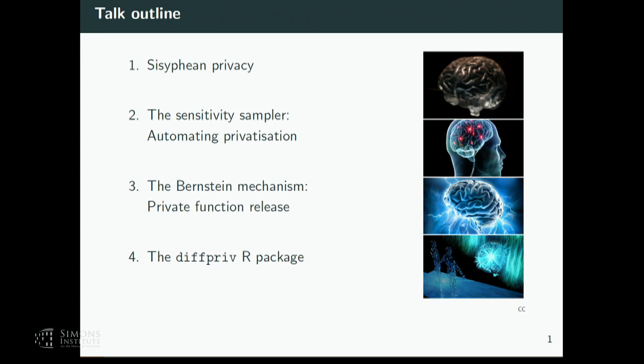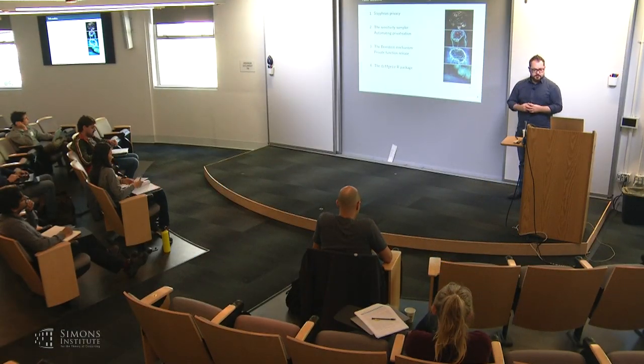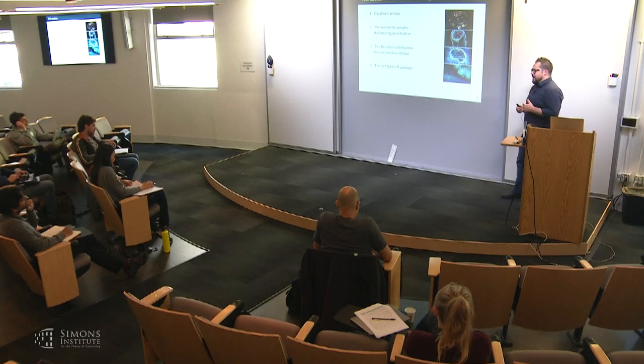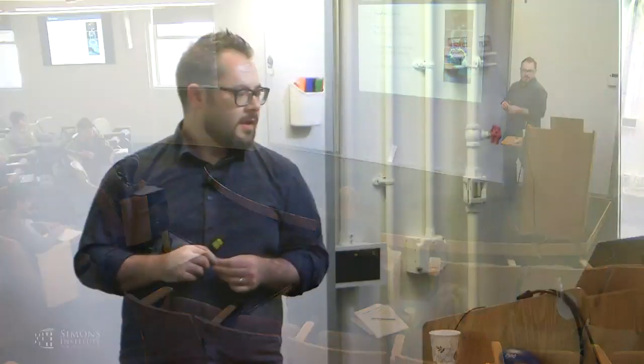The goal of the sensitivity sampler is to automate and remove some of the burden of using differential privacy — not with the goal of replacing anything else, but just maybe another way to do things sometimes. Depending on how the time goes, I'll talk more or less about the Bernstein mechanism, which is another piece of work that complements the sensitivity sampler — it's a function release mechanism. And hopefully I'll give a plug for a package that implements these ideas.